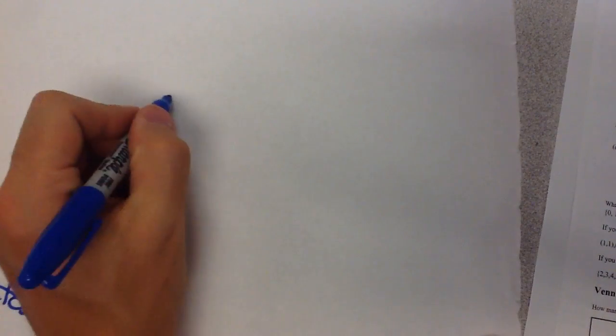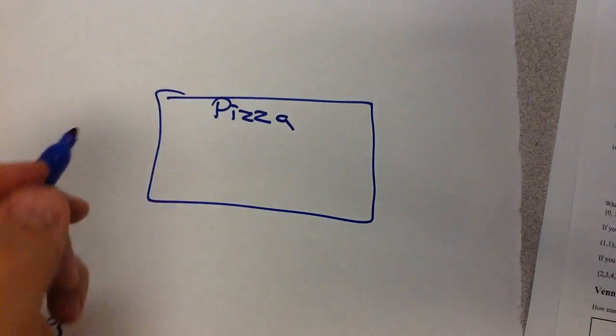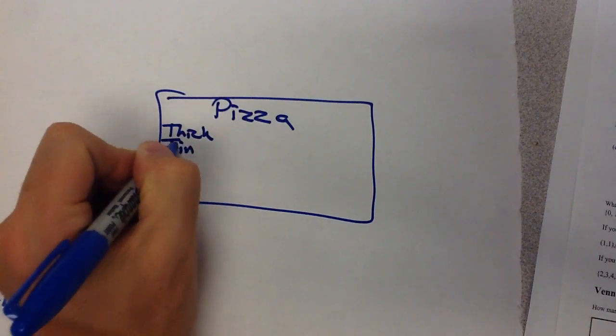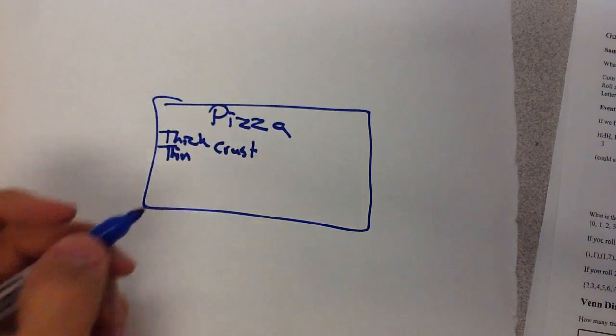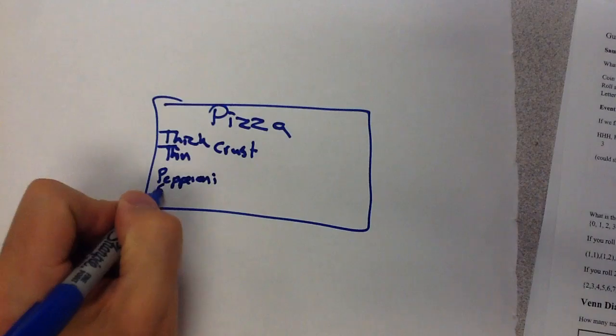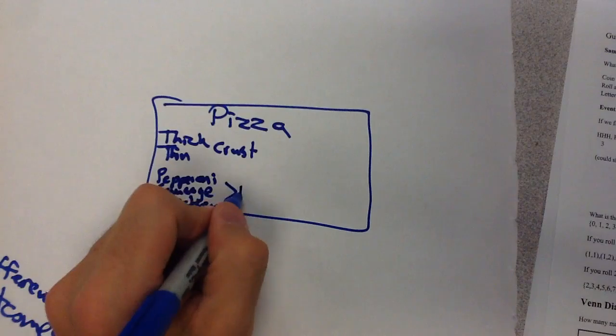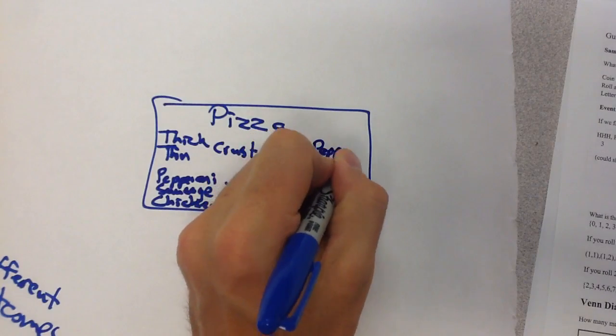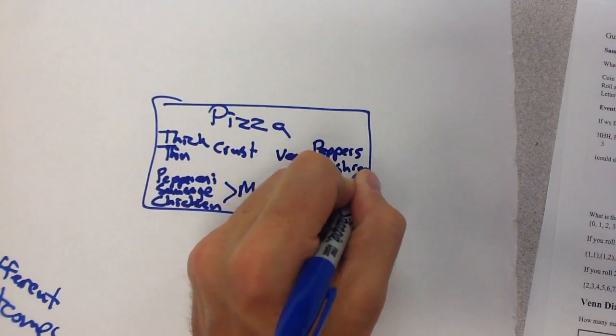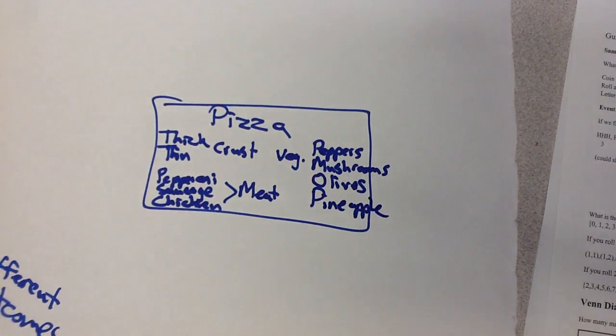Now let's think outside of just our dice and our coins. Let's say you're going to get some pizza. And the pizza, you have two options. You could get a thick crust or a thin crust. You could get, maybe their special is you get one meat with that. So you're either going to get pepperoni, sausage, or chicken. And then you get one vegetable with it. And you could have peppers, mushrooms, olives, and we'll say pineapple even though it's not a vegetable.